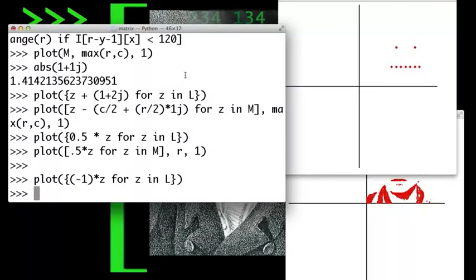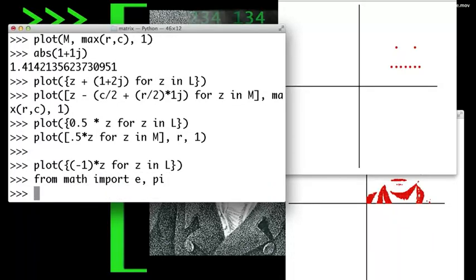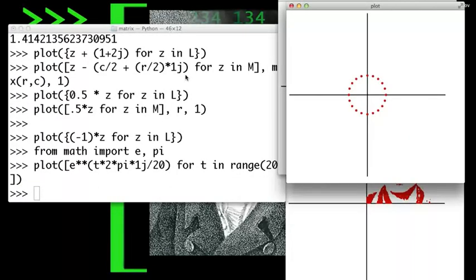Let's form a bunch of complex numbers by plugging in multiples of 2 pi over 20 for theta in Euler's formula. First, we have to get pi and e. Now, it forms a circle of dots.